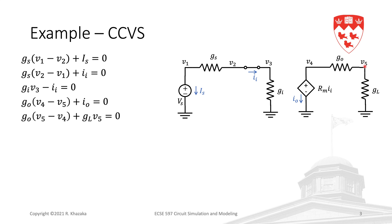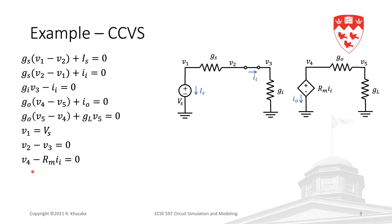We have written all five KCL equations, but we also have three additional unknowns: is, ii, and io. So we need three additional model equations — one for each voltage source and the short circuit. The model equation for the independent voltage source gives v1 = vs. For the short circuit: v2 = v3, i.e., v2−v3 = 0. For the controlled source: v4 = rm×ii, i.e., v4 − rm×ii = 0.